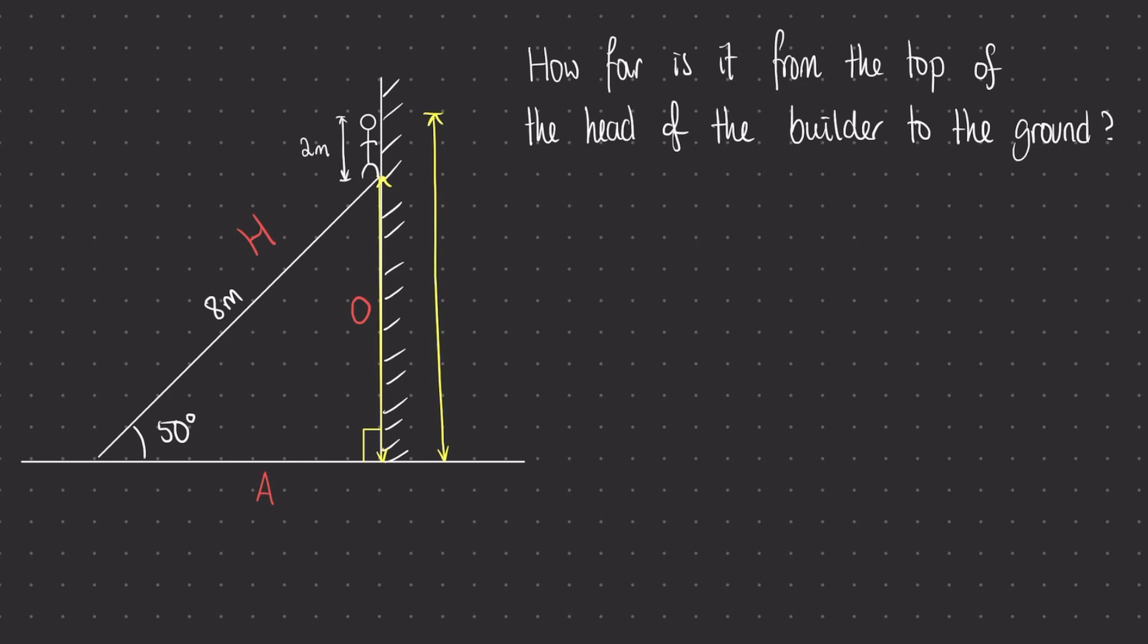The two sides that we require are the opposite side and the hypotenuse. The equation that we must use is sine equals opposite over hypotenuse. Let's substitute what we know into this equation. We know that the angle is 50 degrees, and that the hypotenuse is 8.